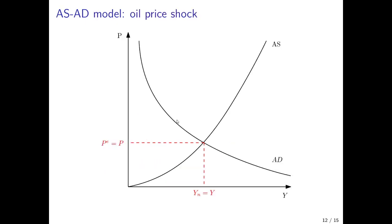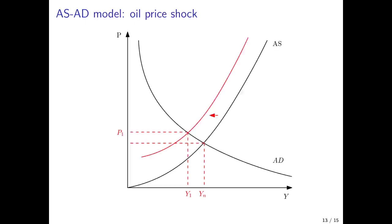Finally, consider what could happen in the case of an oil price shock. We begin where the short run equilibrium equals the medium run equilibrium — price expectations equal actual prices and actual output equals natural output. The economy is then hit by an exogenous increase in oil prices, leading to an increase in price expectations. The AS curve shifts to the left, and the new short run equilibrium has output below the initial natural output level and higher prices.